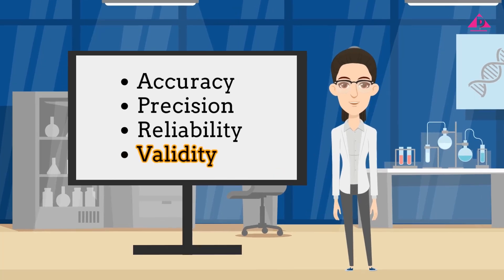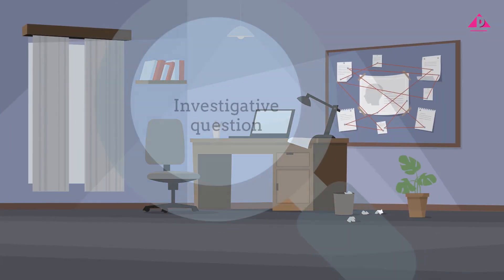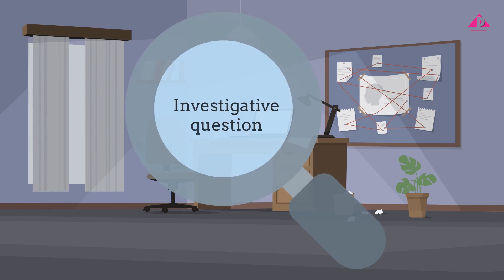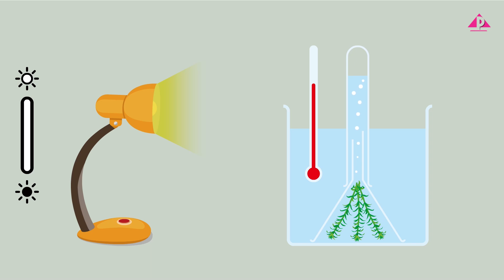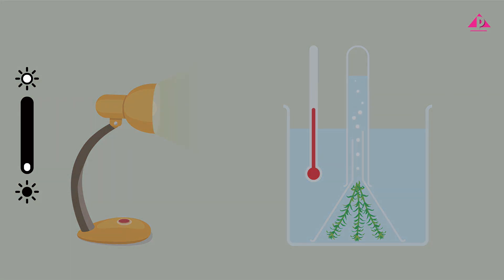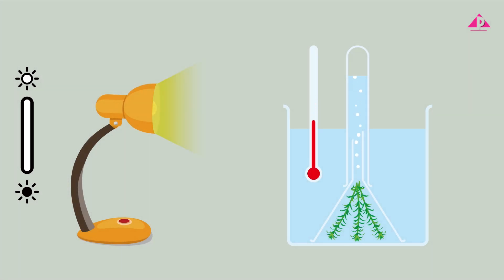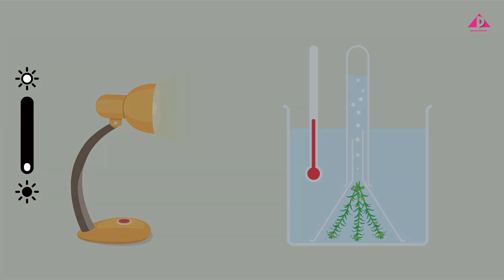Last but not least, validity. This is about making sure your experiment actually answers the investigative question you're asking. Imagine you are investigating how light intensity affects photosynthesis, but you forget to keep the temperature constant. Now you can't tell if your results come from light or temperature.